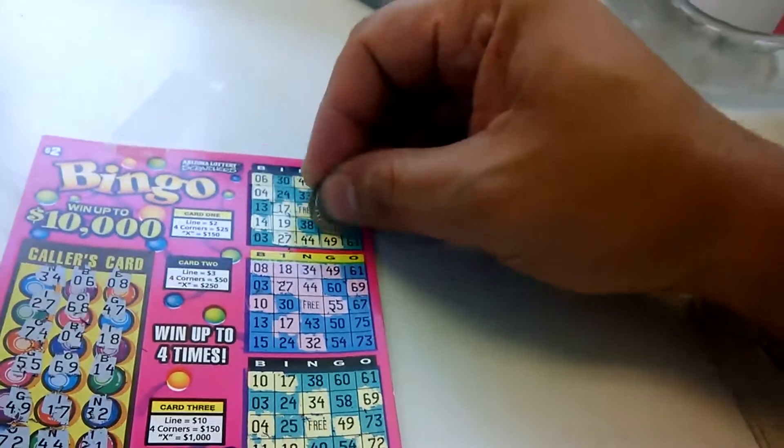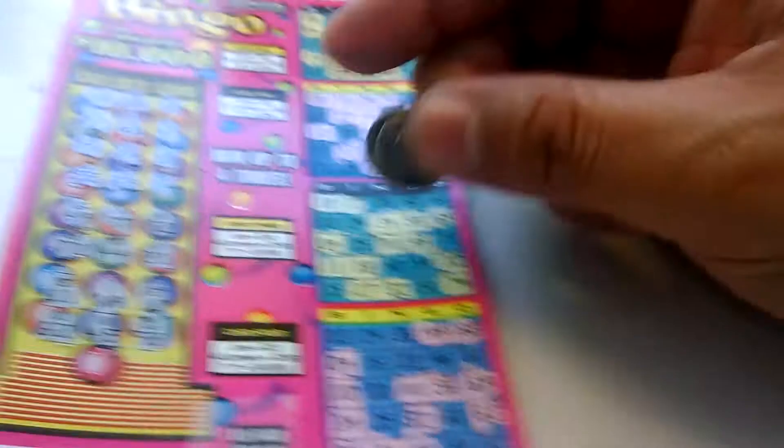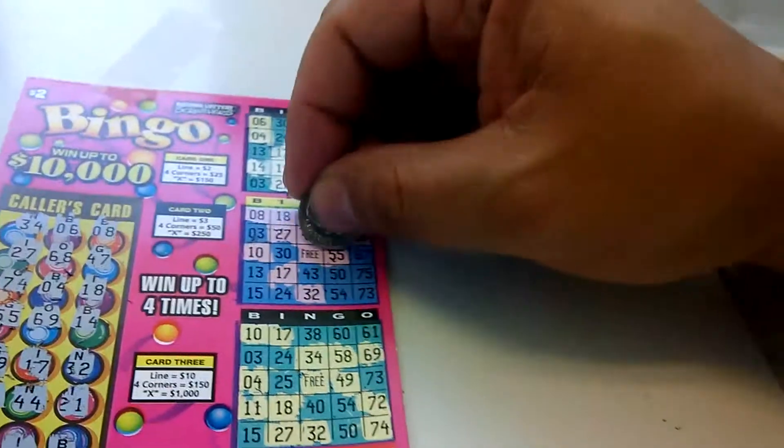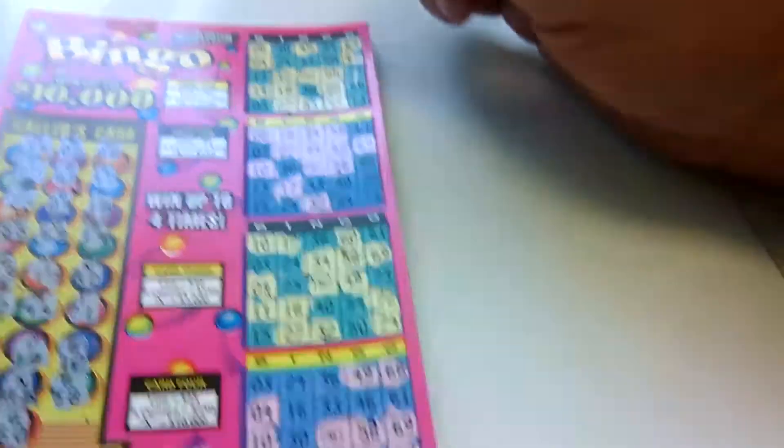G58. One there. One there. And one there. And the last one is a G60. One G60. Two G60. Three G60.